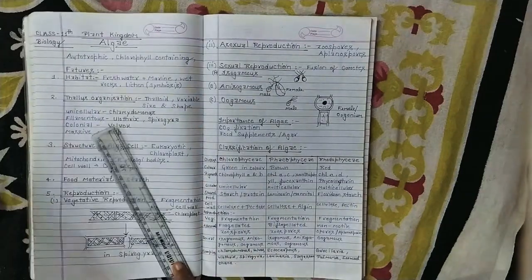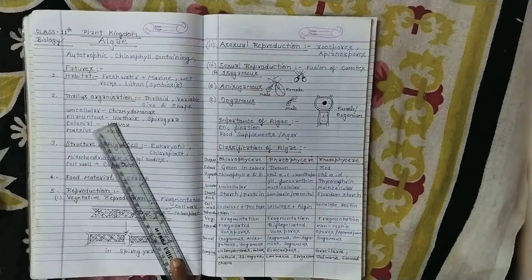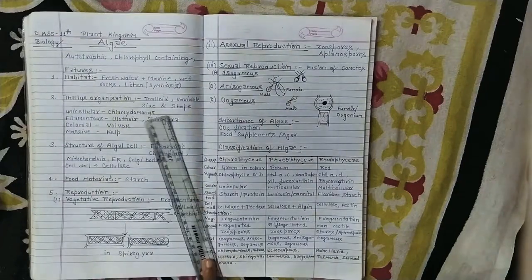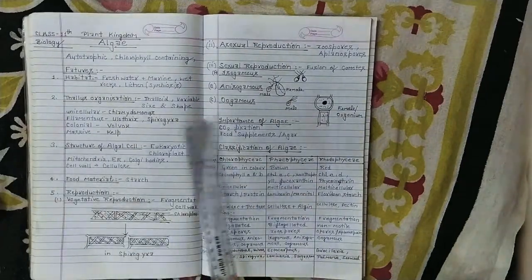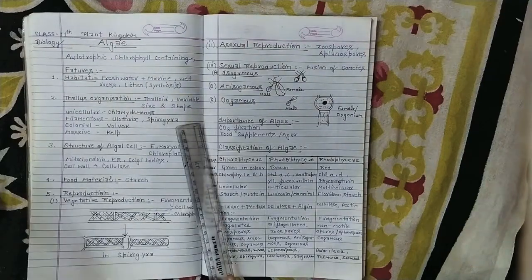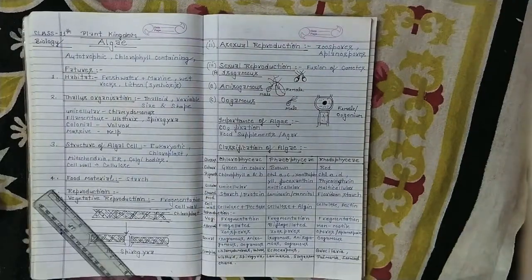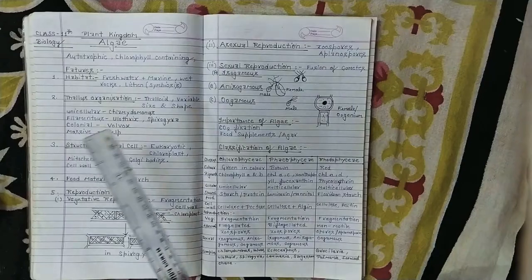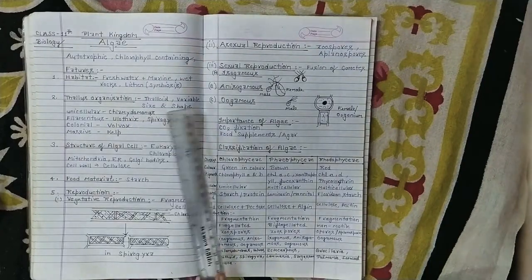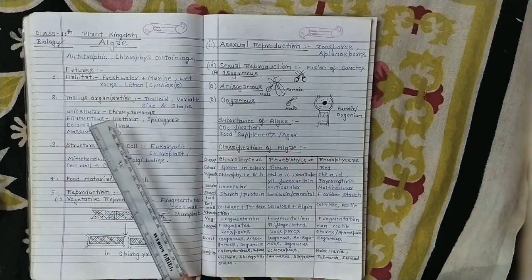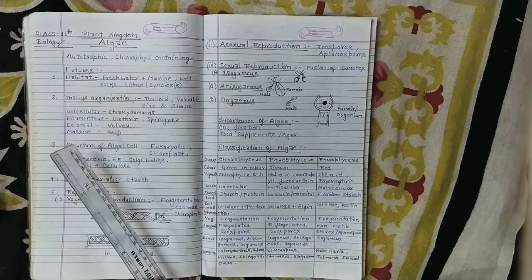Next is the thallus organization. The plant body is thalloid, thalloid means undifferentiated. They don't have root, leaf, or stem. They don't have any such structure. The size is variable, the size ranges from small to 100 meters.